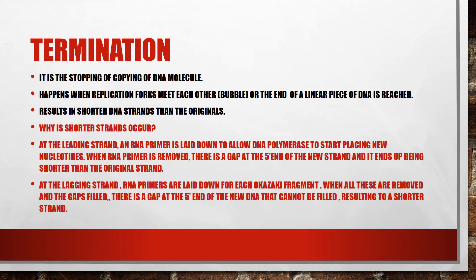From elongation, we move to the termination process. This is basically the stopping of copying of the DNA molecule, and it happens when replication forks meet each other at the bubble, or when the end of the linear piece of DNA is reached. Termination results in shorter DNA strands than the original DNA molecule.